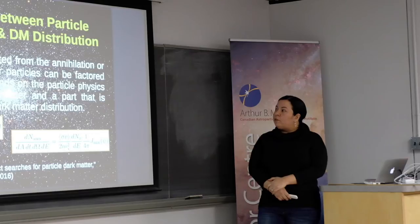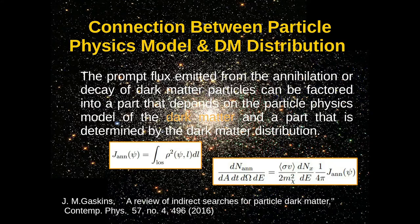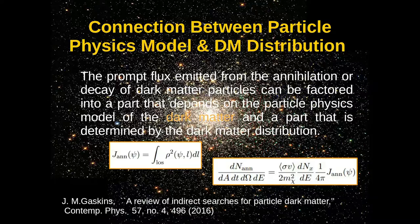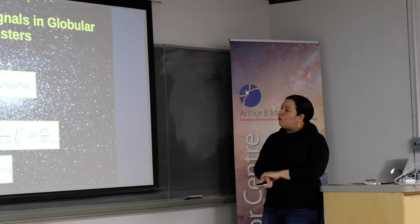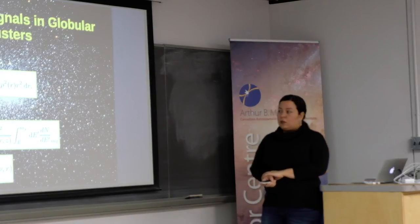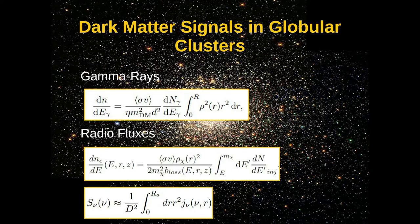The prompt flux emitted from dark matter annihilation can be factored into a part depending on the particle physics model and a part depending on the dark matter distribution. The particle physics part includes the mass of dark matter, the annihilation cross-section, and the spectrum to be produced — which depends on the final state and the dark matter mass. The other factor is the J factor. We will work with both radio flux and gamma ray flux. Similarly, there is a part depending on particle physics and a part depending on dark matter distribution, where eta accounts for dark matter annihilation, and we also have the distance from the source and the spectrum of the final product of dark matter annihilation.